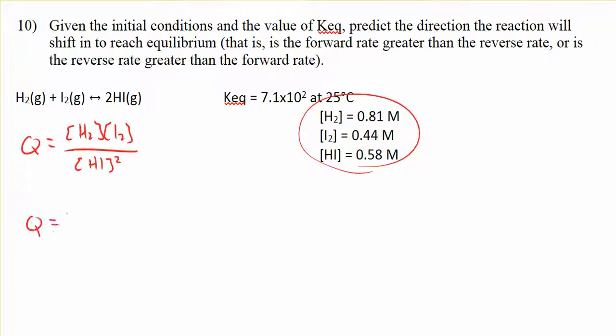I want to plug in some values. The initial concentration of H2 is 0.81 molar, the initial concentration of I2 is 0.44 molar, and the initial concentration of HI is 0.58 molar squared. Computing that gives us a Q value of 1.05.